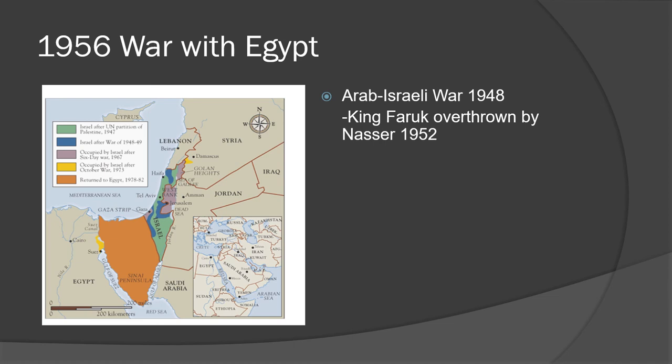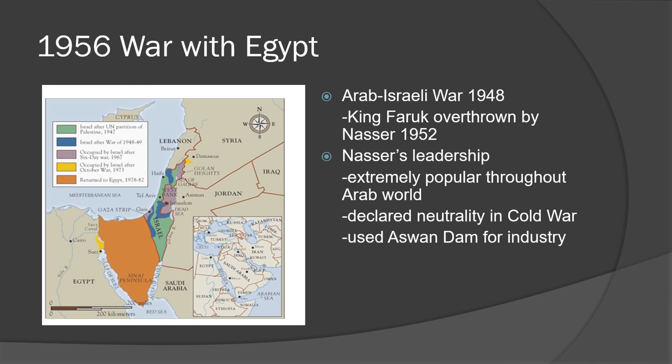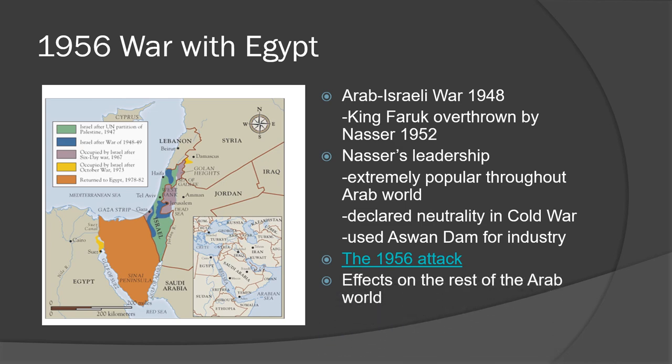Most of the leaders of the Arab countries that fought against Israel in 1948 were assassinated or overthrown. In 1952, Gamal Abdul Nasser came to power in Egypt. He was extremely popular throughout the Arab world, so much so that Israelis feared him — they believed he could unite the Arab world against them. In 1956, they attacked and routed the Egyptian army. The Israelis occupied the Sinai Peninsula, and Nasser became even more popular.